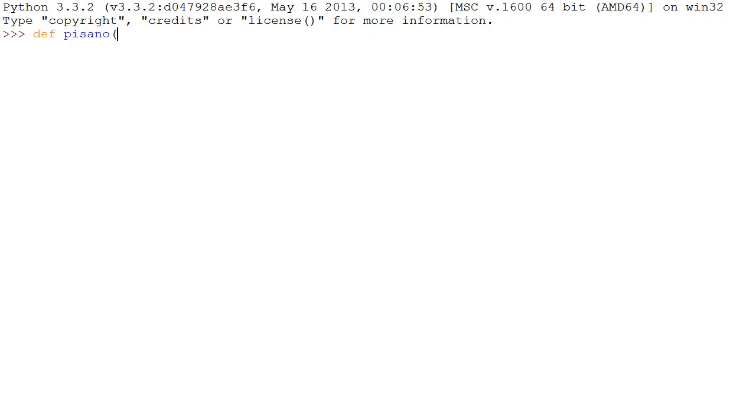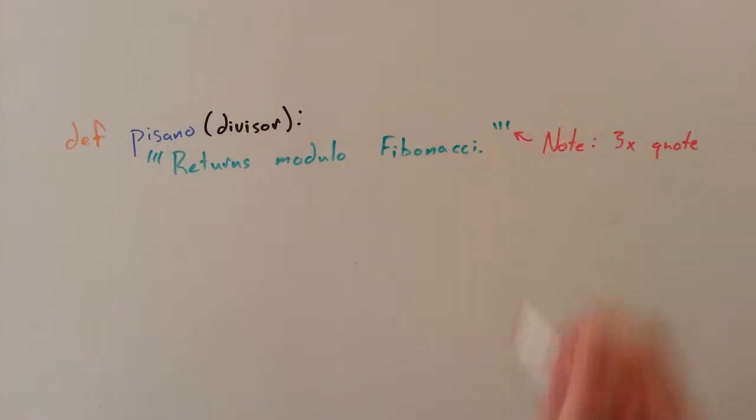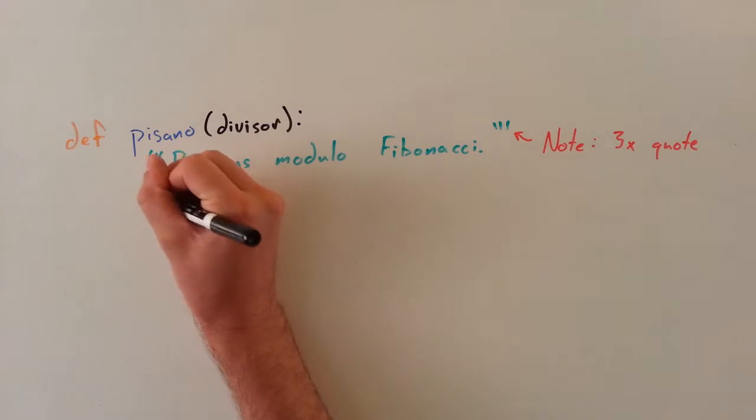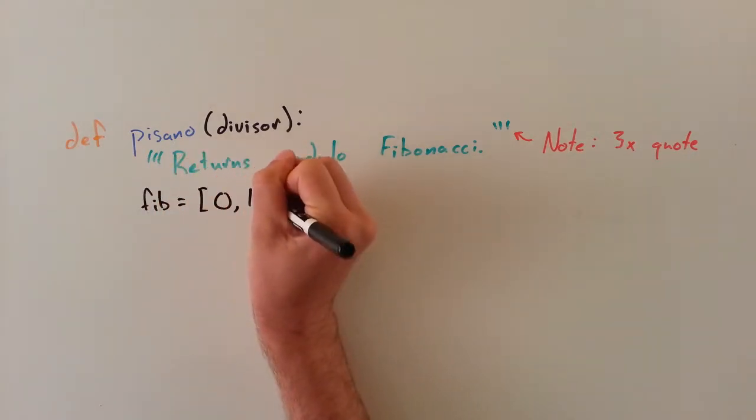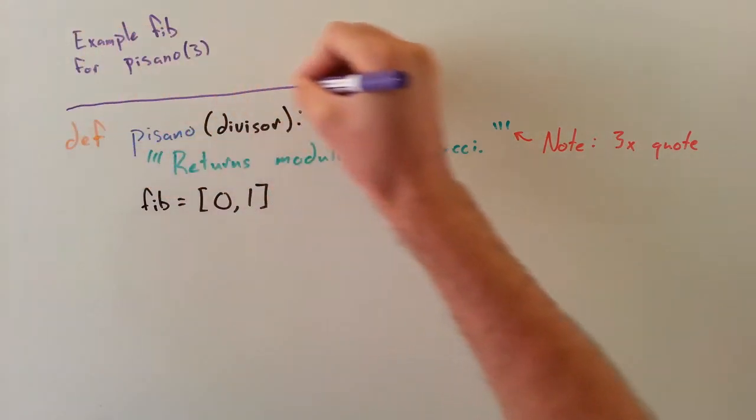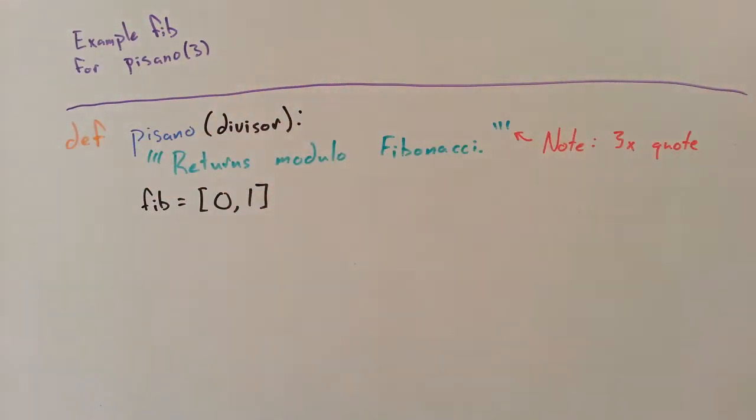Alright let's define a function called Pisano which takes the divisor as an argument. Before we actually do anything it's a good habit to write a bit about the function. To begin we need to set up the start of the Fibonacci sequence, so we create a variable called fib, make it an array which is essentially an ordered list and set the first two numbers 0 and 1.